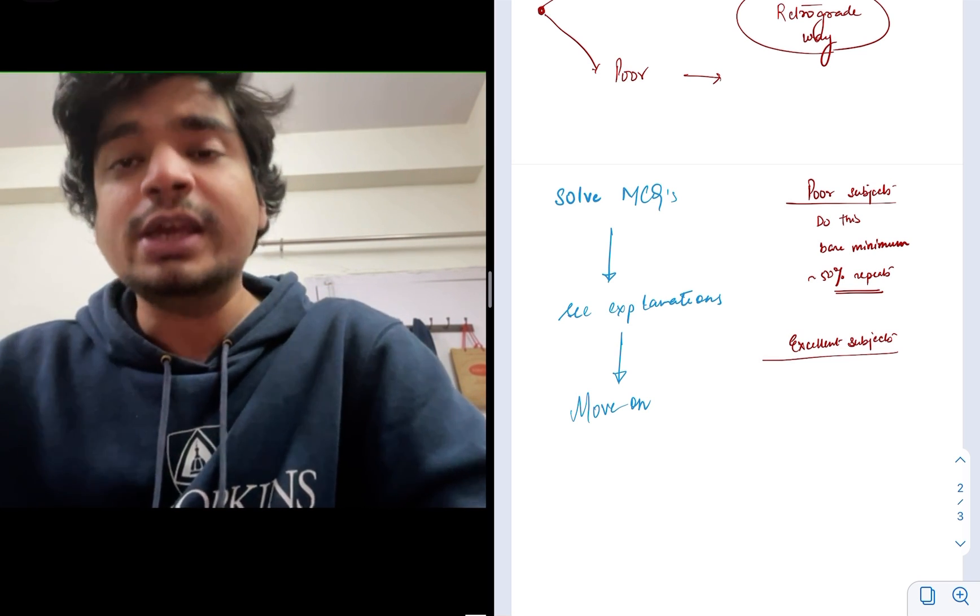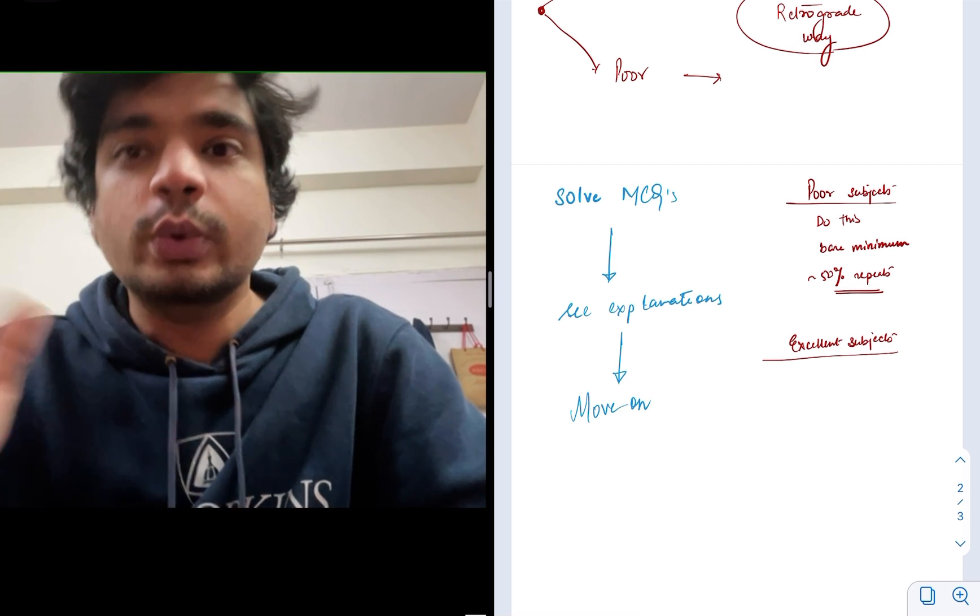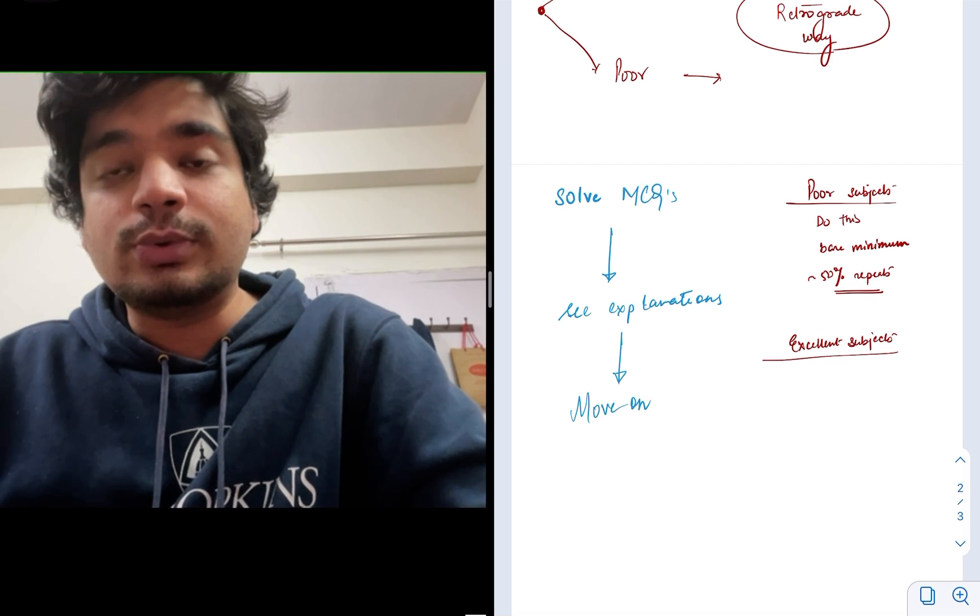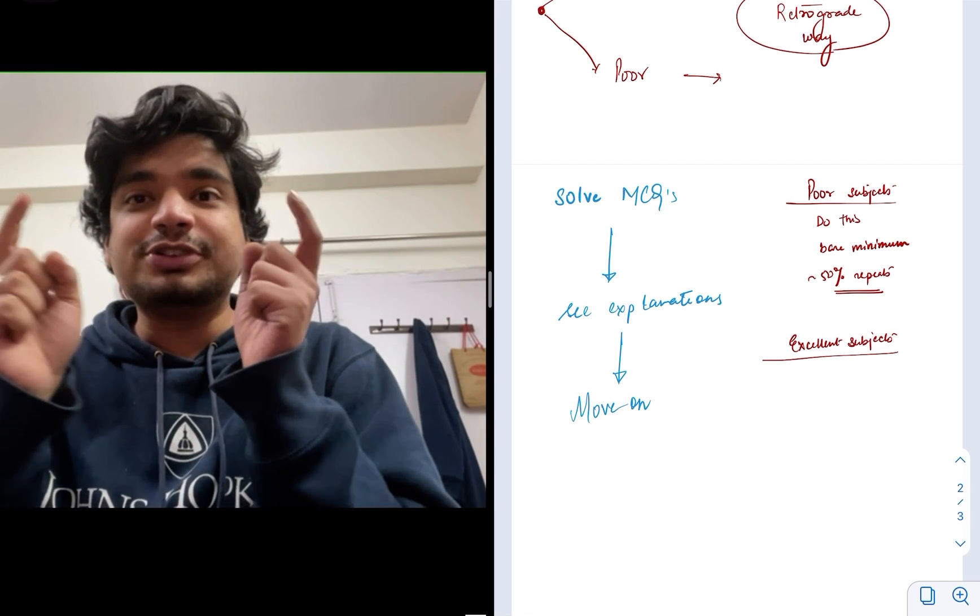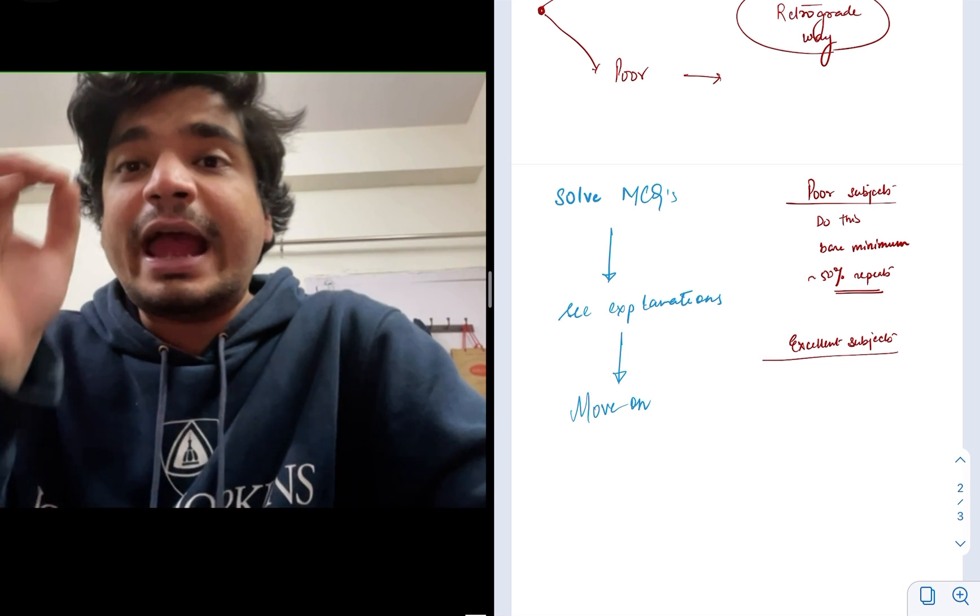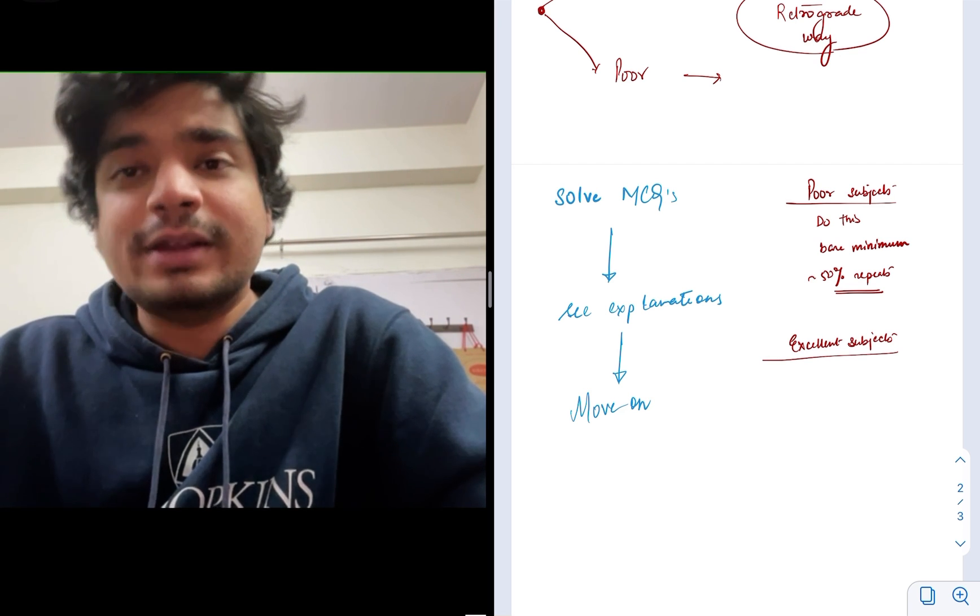Taking example of my NEET UG, I was horrible in waves. I did not do it in 11th standard and not even in 12th standard. I just solved previous year MCQs, and that's why I realized that particular question, two people moving towards each other and the Doppler effect. I had practiced only that MCQ multiple times and that came in the examination.